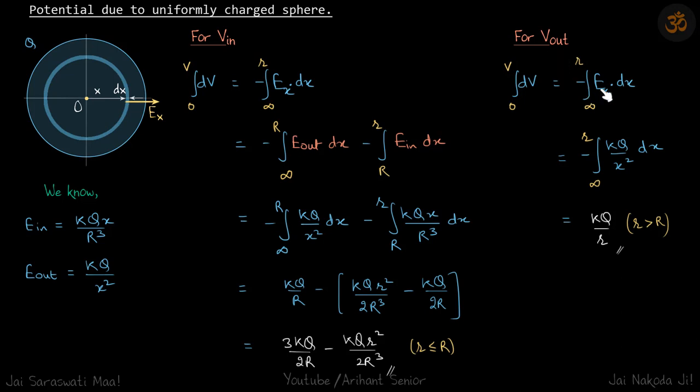For outside the sphere our e is only kq by x square. So we'll put only that and limits will be again infinity to r and we'll get the answer kq by r which is expected of same as that of a charged kept at the center itself.